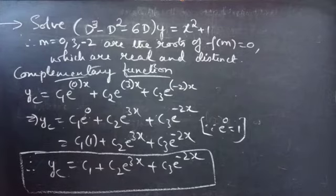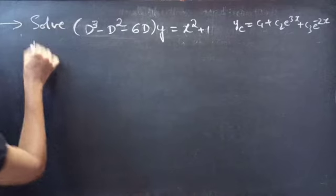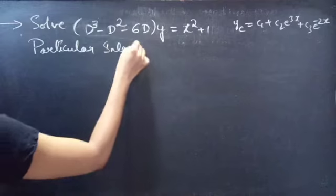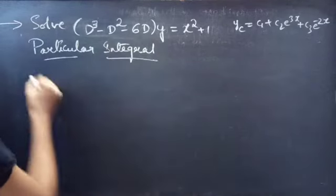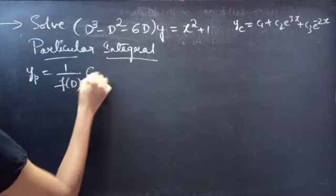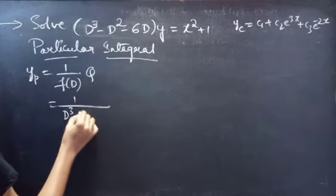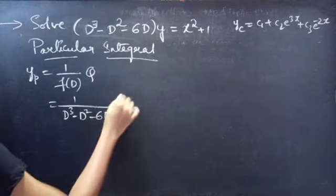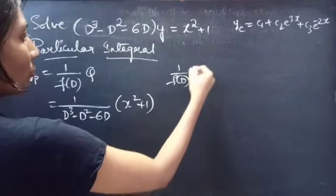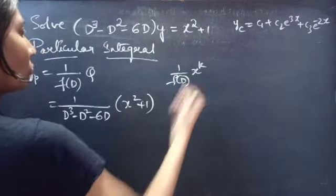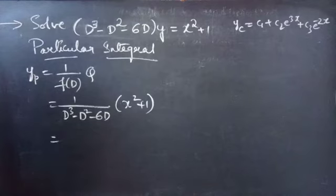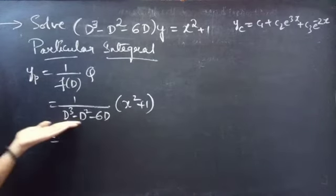Now let's find the particular integral. We know yp = (1/f(D)) × Q = 1/(D³ - D² - 6D) × (x² + 1). We have the form (1/f(D)) × x^k. In the denominator, the terms are in descending order. Now let's take the lowest degree term common from all three terms — take -6D common.